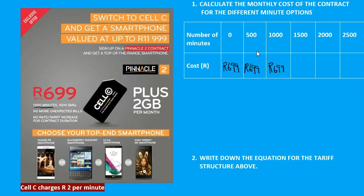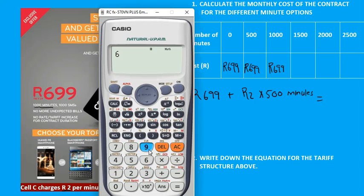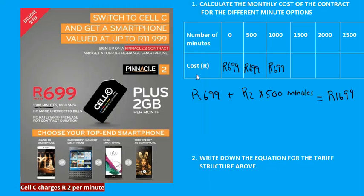After 1000 minutes, the person will start paying extra. If the person uses 1500 minutes, they pay R699 for the contract plus the Cell C charge of R2 per minute — but they don't pay for the first 1000 free minutes. So of those 1500 minutes, they only pay for 500 minutes. That gives us: R699 + R2 × 500 = R1699.